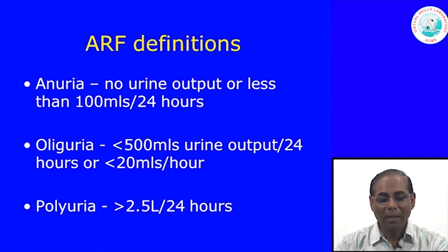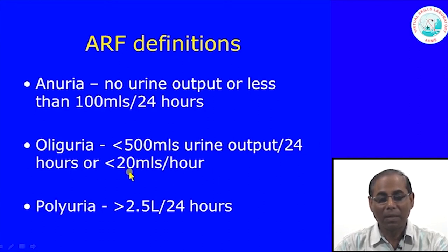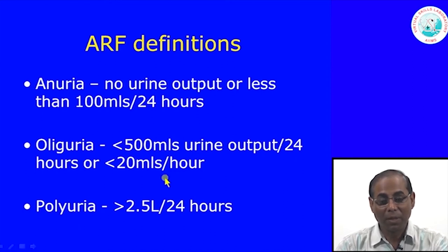Clinically, a patient may present without any urine formation — urine output less than 100 ml per 24 hours — which we call anuria. Output less than 500 ml, or some say less than 400 ml, per day, or less than 20 ml per hour, is called oliguria. In the recovery stage of acute tubular injury, because tubular absorption is defective, the patient may present with polyuria — more than 2.5 liters per 24 hours.